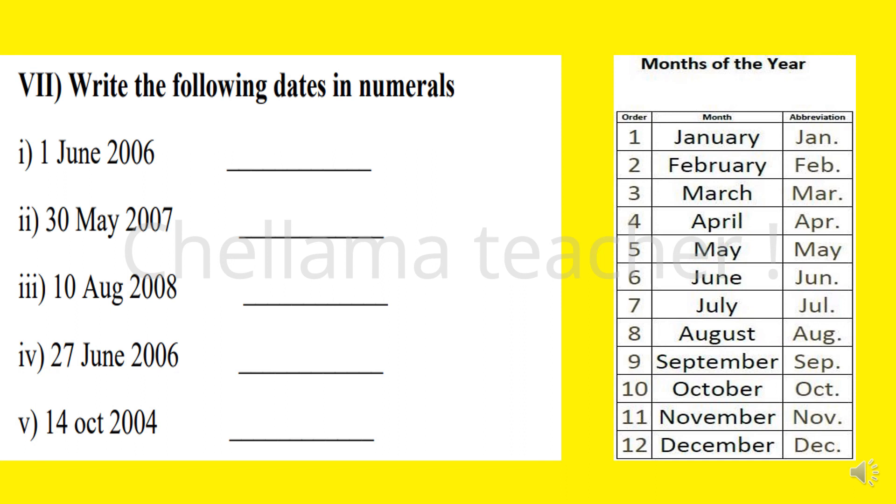First June, that means June is the 6th month. So we can write the date in numeral as 1-06-2006 or 1 hyphen 06 hyphen 2006. Next question: 30 May. May is fifth month, so we can write the date as 30 hyphen 05 hyphen 2007, or 30-5-2007.